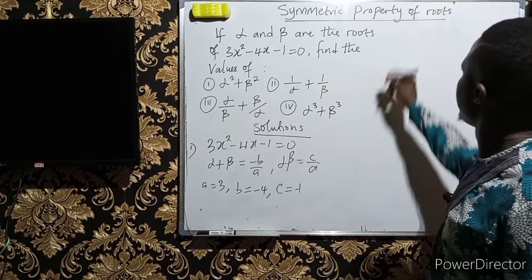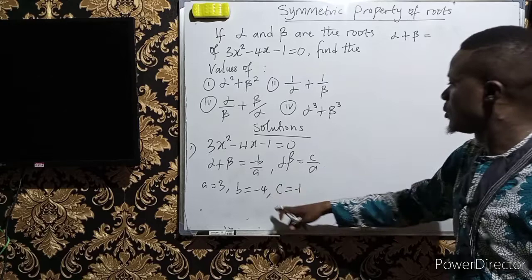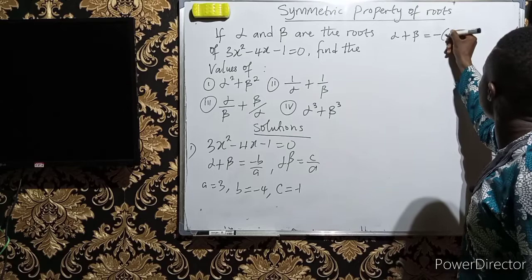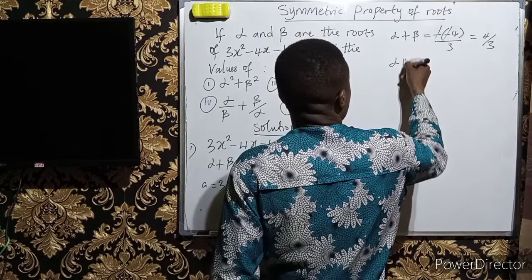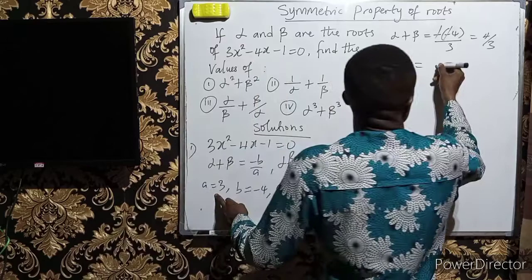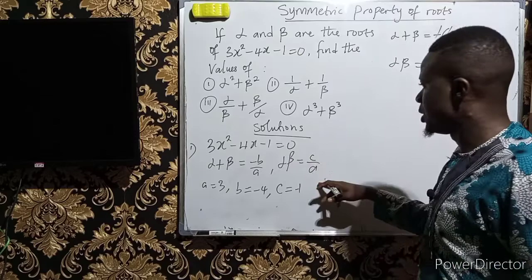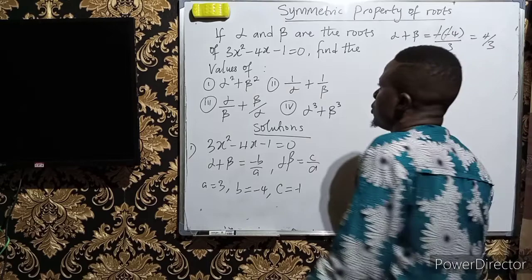Alpha plus beta equals minus b over a. Since b is already minus 4, minus b gives us minus of minus 4, which is 4, over a which is 3. So alpha plus beta equals 4 over 3. Then alpha beta equals c over a, where c is minus 1 and a is 3, giving us minus 1 over 3.